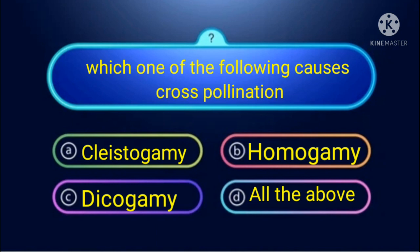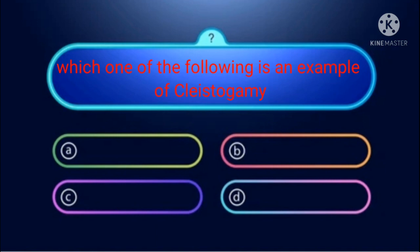Homogamy means both reproductive systems mature at the same time — so no cross-pollination. Dicogamy means both reproductive systems in a bisexual flower, but male and female reproductive systems mature at different times. In a bisexual open flower, if it is homogamous, both systems mature simultaneously so no cross-pollination occurs. But dicogamy promotes cross-pollination. Therefore, dicogamy is the answer.